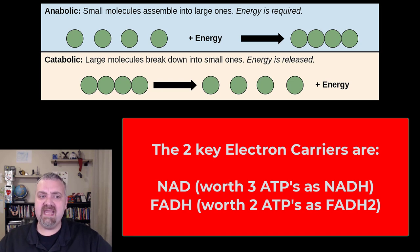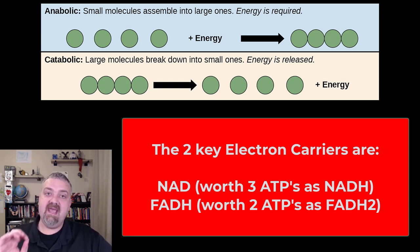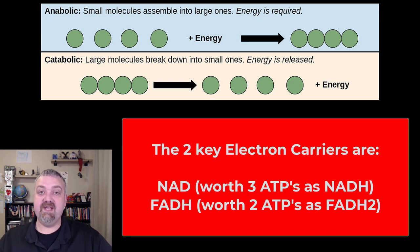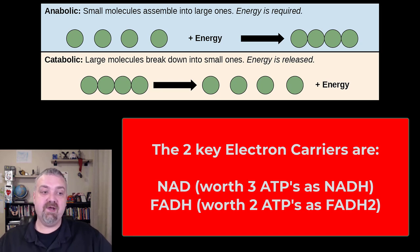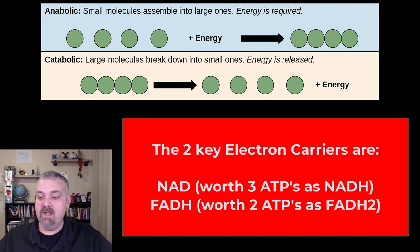I won't ask you to know their full names, but NAD is nicotinamide adenine dinucleotide — nicotinamide should make you think of niacin, so it's built from the B vitamin niacin. FAD is flavin adenine dinucleotide — flavin, think riboflavin. So they are made from the B vitamins niacin and riboflavin. The other key things to note: as NADH transfers electrons to your electron transport system, NADH is worth three ATPs and FADH2 is worth two.